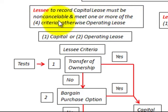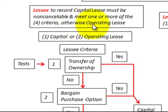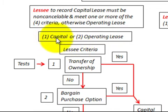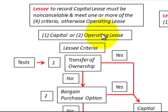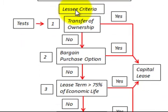A capital lease must be non-cancellable and must meet one or more of four criteria. Otherwise it would be classified as an operating lease. So for the lessee, we either record it as a capital lease or an operating lease. Let's look at the lessee's criteria.